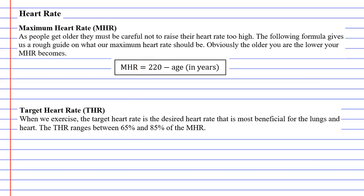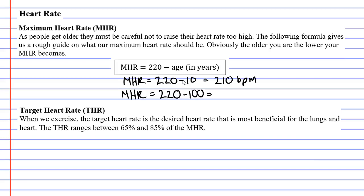The following formula is used to calculate a person's maximum heart rate. If someone is 10 years old, we go 220 minus their age, minus 10, giving a maximum heart rate of 210 beats per minute. Whereas someone who's much older — let's say 100 — we use the formula: 220 minus 100, giving a maximum heart rate of only 120 beats per minute.